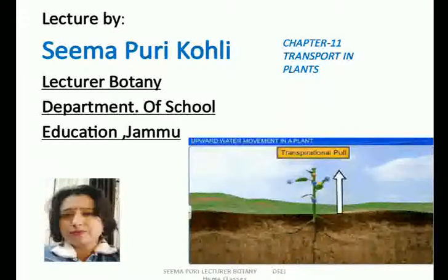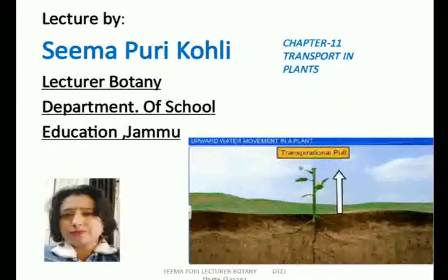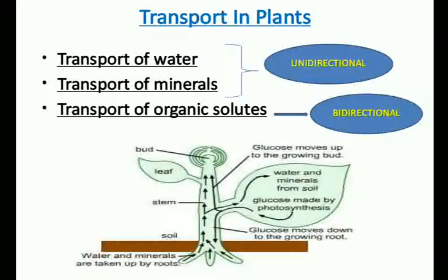The movement across short distances — within the cell, across membranes, and from cell to cell within the tissue — also has to take place. In this chapter we will understand how water, as well as other substances, move inside the plants. When we talk about the movement of substances, we need to first define what kind of movement we are talking about and what substances we are looking at.